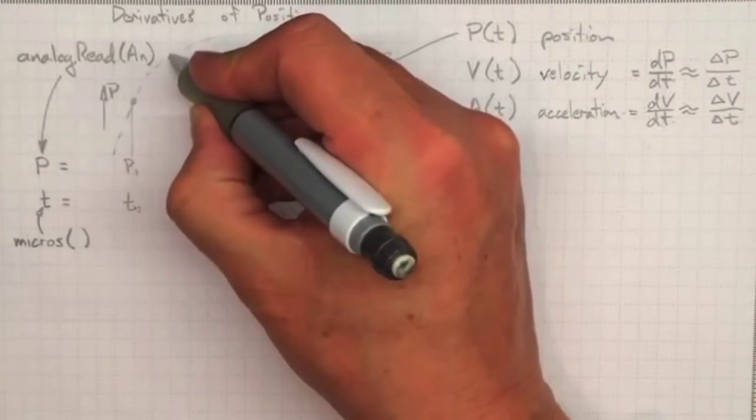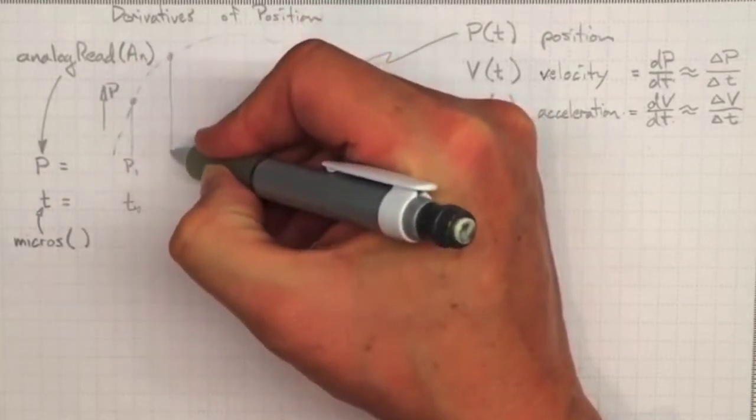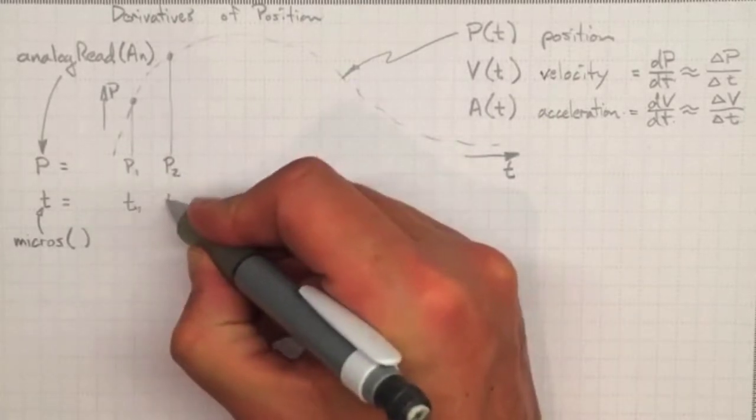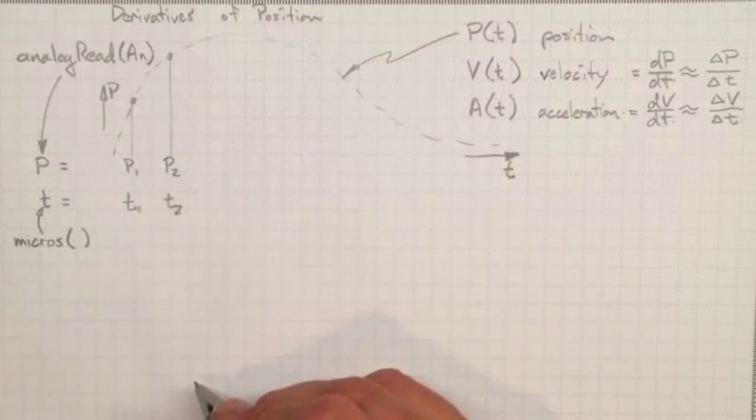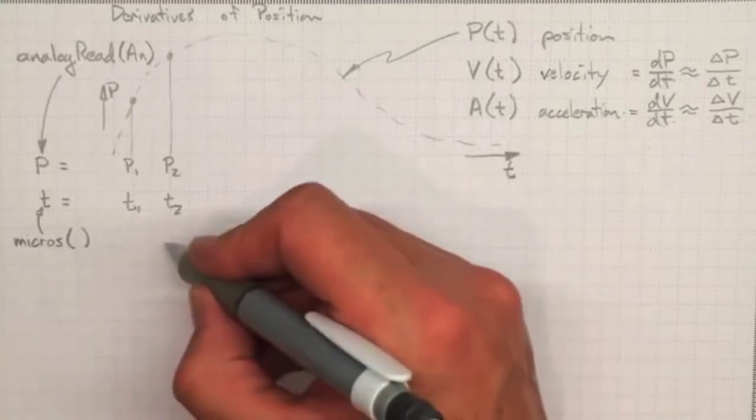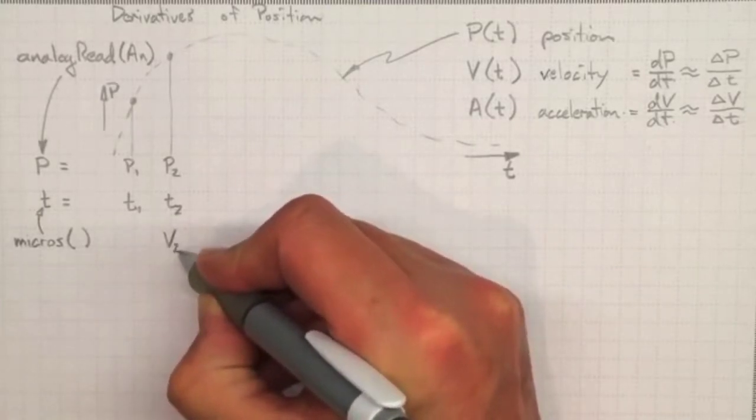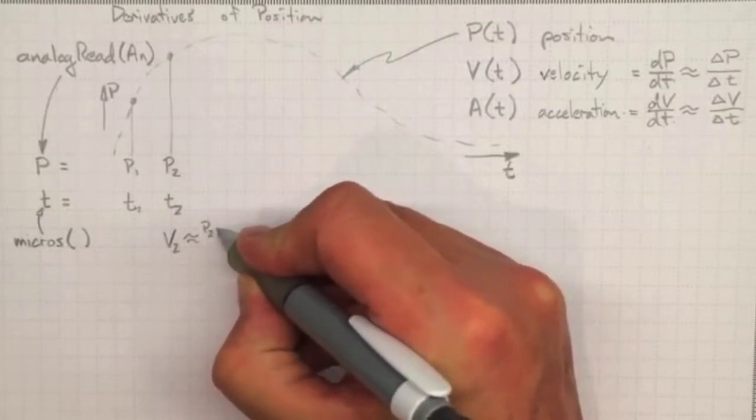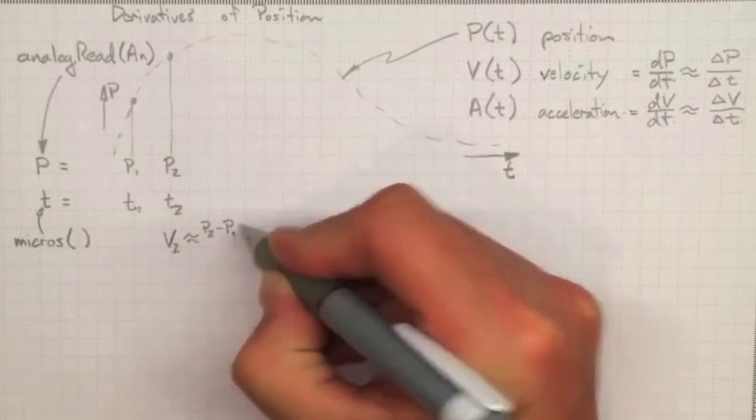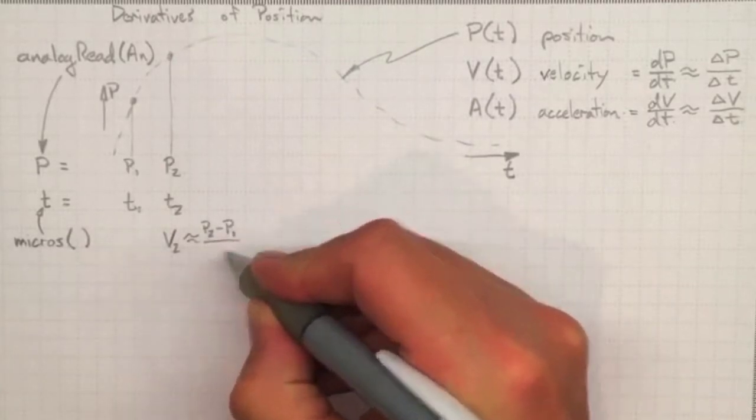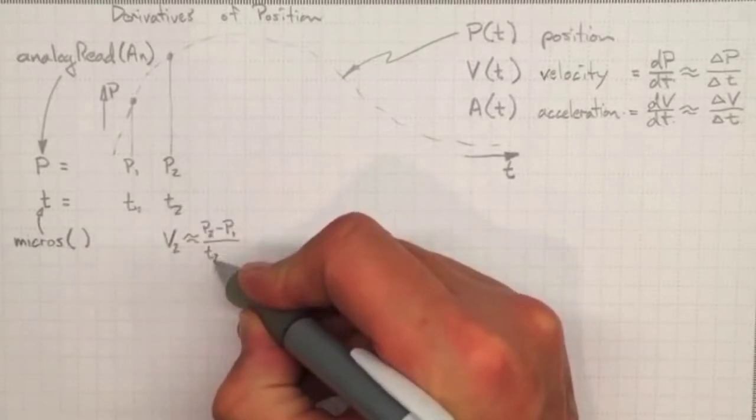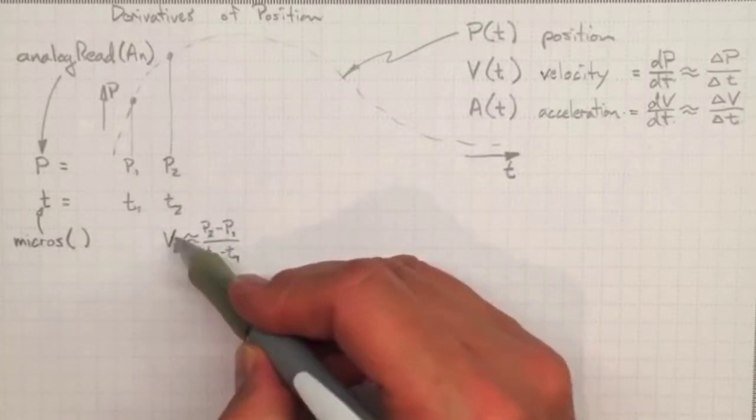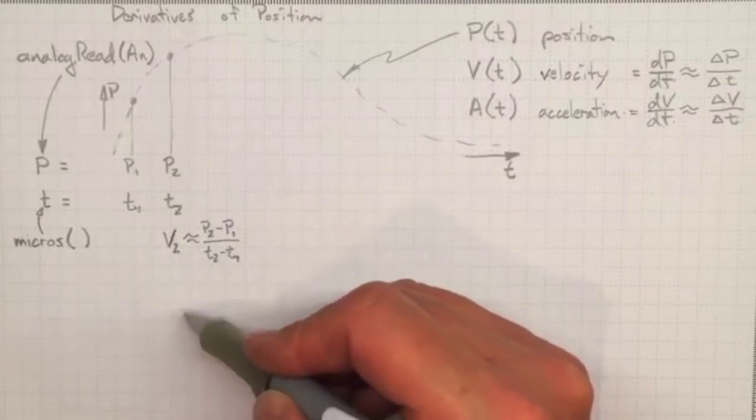But if we wait a little while and take another position measurement, then we can get the position at some later time two and the time when we took that second measurement. Now we can make an estimate of what the velocity is. The velocity at time two is approximately equal to what the position is now at time two minus what the position was before at time one, divided by the difference in time t2 minus t1.